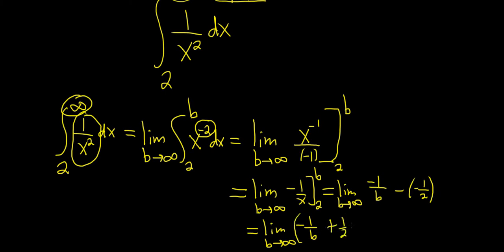At this point, I think we're ready to take the limit. Because everything is good. When b gets really, really, really big, this fraction gets really, really small. And it approaches 0. So we get 0 plus 1 half. Which is equal to 1 half.